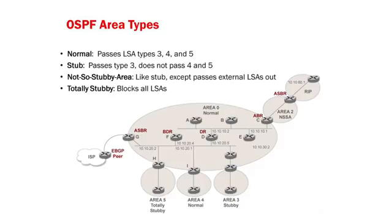We have four different types of areas. The first one is normal. Your backbone, or area zero, is always going to be a normal area, and your other areas may or may not be normal. A normal area carries all types of LSAs or routes — it can have regular routes, summary routes, external routes coming from an autonomous system boundary router that have been redistributed into OSPF, and a default gateway. Any type of LSA or route is allowed in the normal area, with the exception of a Type 7, which we'll talk about later.